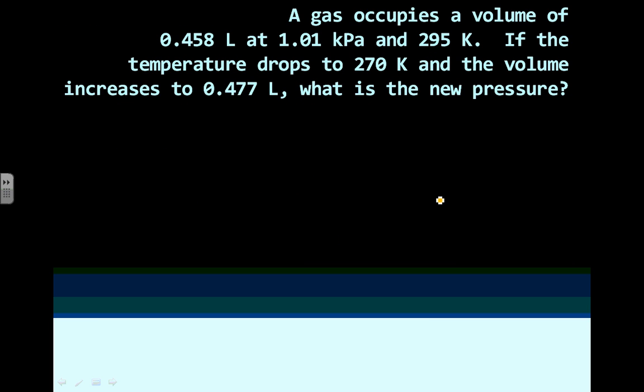All right. One last problem here. A gas occupies a volume of 0.458 liters at 1.01 kilopascals and 295 Kelvin. If the temperature drops, that's a change to 270 Kelvin. And the volume increases, so another indication of change to 0.477 liters. What is the new, again, change pressure? So, I'm definitely looking here for P2. I have temperature, volume, and pressure. When I look, the only equation possible that involves all three is? Good job. I knew you'd get it right.